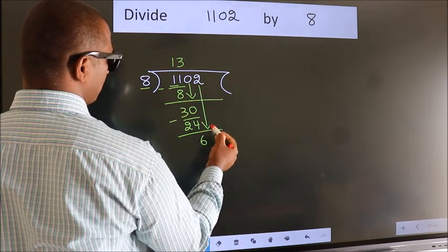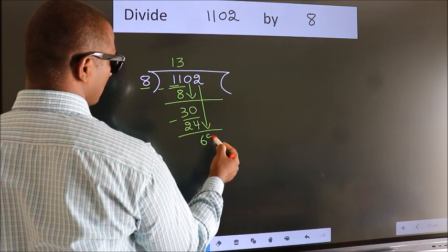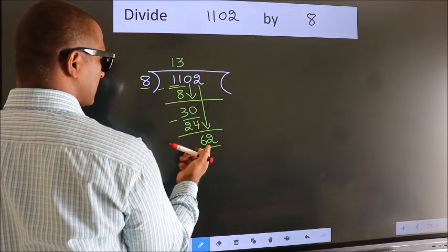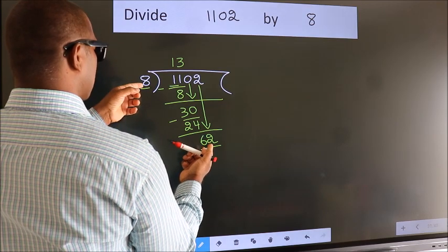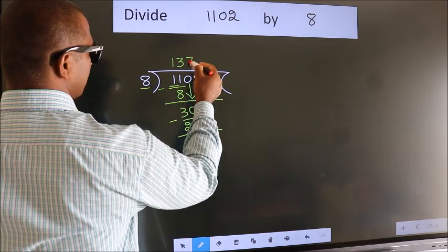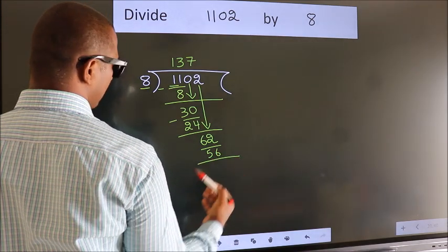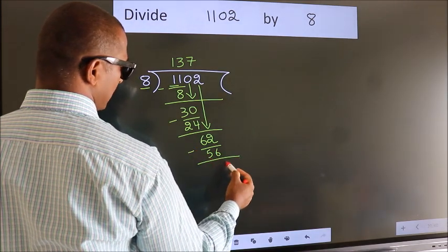After this, bring down the beside number. So 2 down. So 62. A number close to 62 in the 8 table is 8 7s 56. Now we subtract. We get 6.